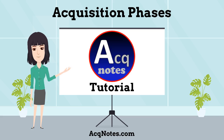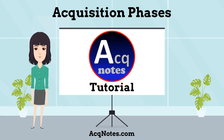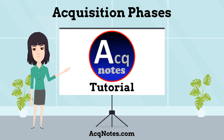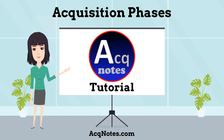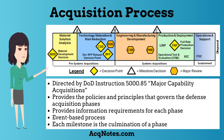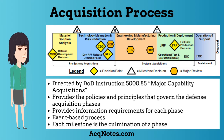Welcome to ACT Notes Tutorials, my name is Professor Shelley, and I am going to give you a quick tutorial on the main phases of the defense acquisition process. The defense acquisition system consists of five distinct phases. The main guidance of these phases is the Department of Defense Instruction 5000.85, titled Major Capability Acquisitions. This instruction provides the policies and principles that govern the defense acquisition system and the phases.